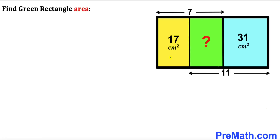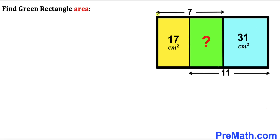Welcome to PreMath. In this video we have got three rectangles — the yellow one, the green one, and the blue one — put together as shown in this diagram, such that the area of the yellow rectangle is 17 cm² and the area of the blue rectangle is 31 cm².